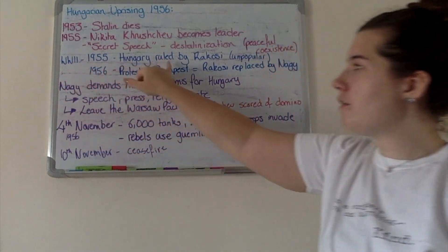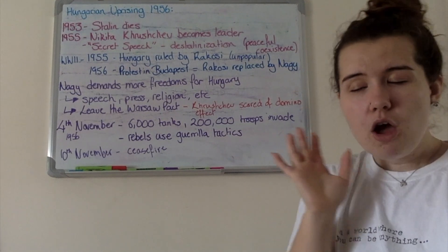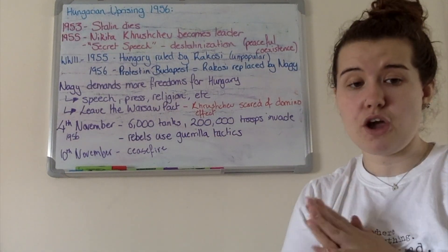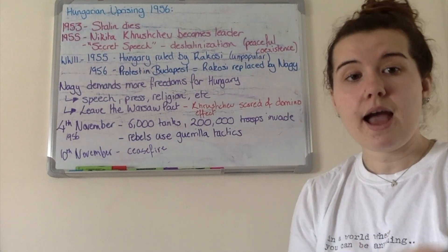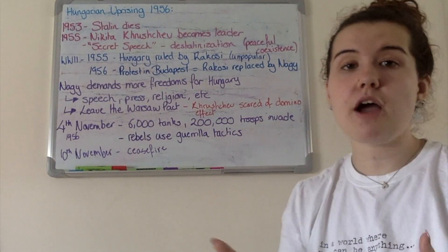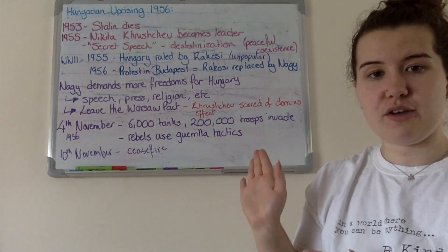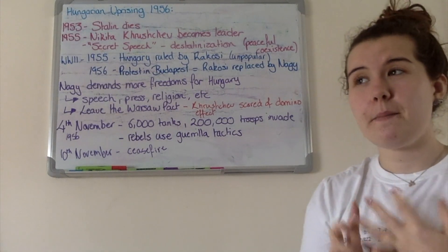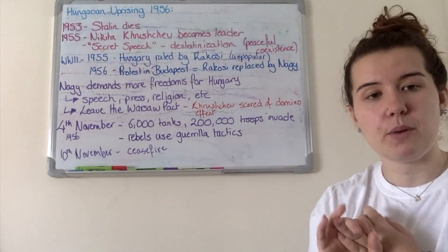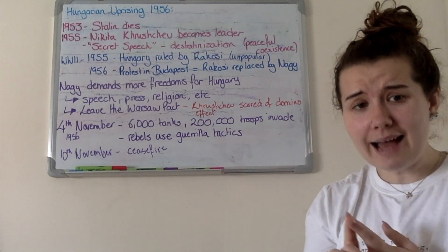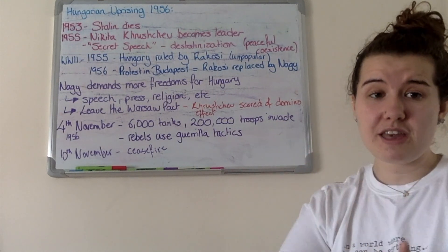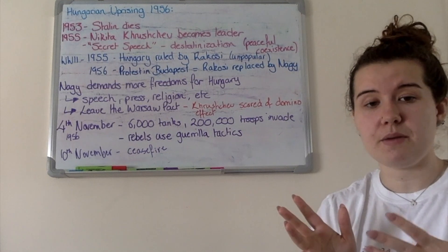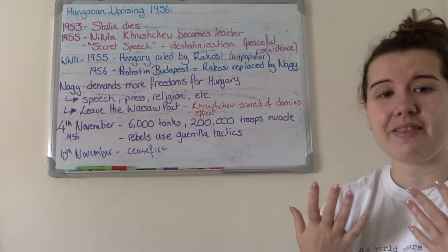Meanwhile, from World War I to 1955, Hungary had been ruled by a guy called Rakosi. Rakosi was a communist put there by Stalin — a complete Stalin fanboy who loved what he represented and how he ran the country. As a direct result, Rakosi ran Hungary very similarly: he was brutal. He would purge the Communist Party and arrest those who went against him. There was a definite lack of free speech and a secret police known as the Arvo. Things were very difficult in Hungary, and Rakosi was extremely unpopular.